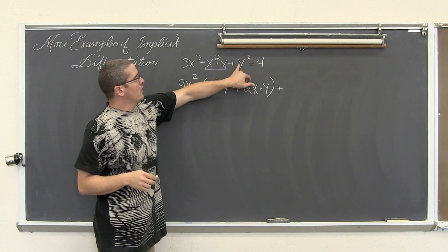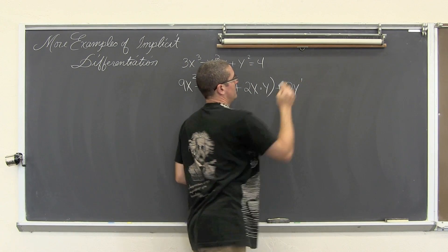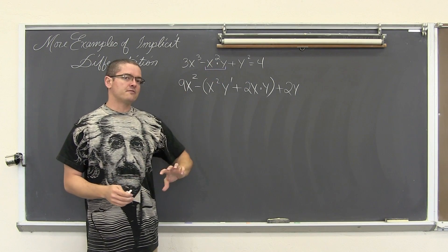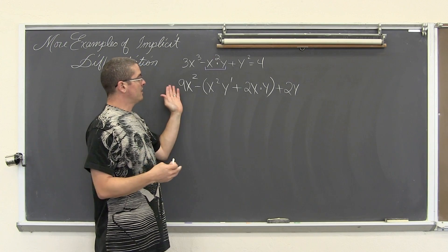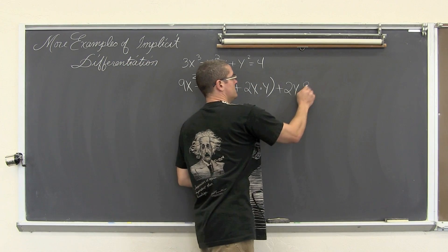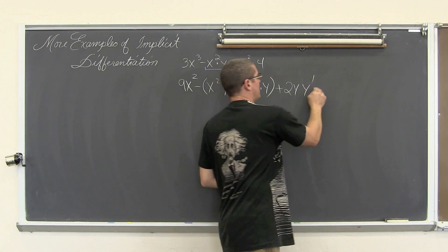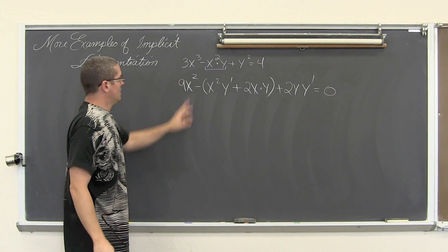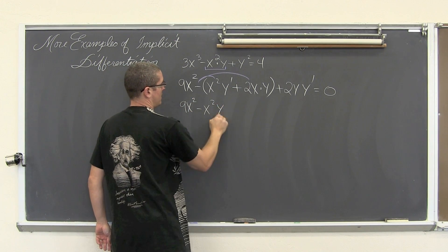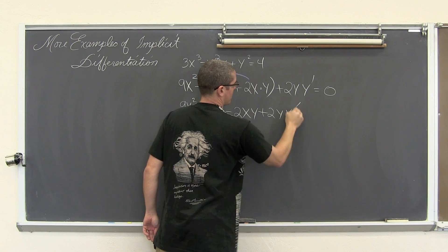Plus, along with the terms here, we have y squared. That is going to use the chain rule or general power rule: bring the power down, so 2y, exponent reduced by 1. That derivative of y with respect to x doesn't just cancel away — that is again dy over dx, or y prime. The derivative of the constant on the right side equals zero.